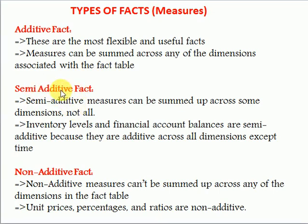So semi-additive fact means at the day level, or whatever time dimension you have, inventory levels like on-hand quantity or available quantity cannot be summed over time. Today you have on-hand quantity 20, maybe tomorrow also 20. Next month when you produce your product you add more quantity — the quantity changes, but you can't take the time-dimension measure. Those facts we call semi-additive facts.